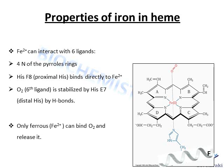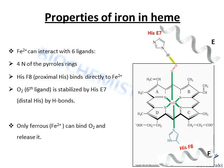Now let's talk about the properties of the iron. Fe2+ can interact with six ligands. Four of these ligands are the nitrogens of the pyrrole rings. The fifth ligand is the imidazole side chain of histidine F8, known as the proximal histidine, as it is close to Fe2+ and can bind to it directly. The sixth ligand is the oxygen molecule, which binds to the iron perpendicular to the porphyrin ring and is stabilized by histidine E7, known as the distal histidine — distal meaning it is far from Fe2+.